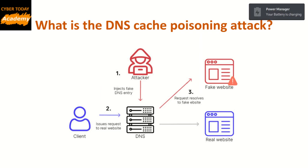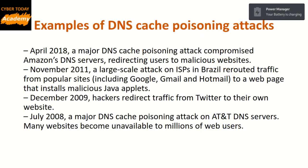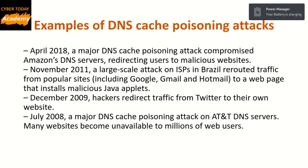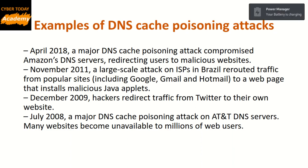Examples of DNS cache poisoning attacks. April 2018: a major DNS cache poisoning attack compromised Amazon's DNS servers, redirecting users to malicious websites. November 2011: a large-scale attack on ISPs in Brazil rerouted traffic from popular sites including Google, Gmail, and Hotmail to a web page that installs malicious Java applets. December 2009: hackers redirected traffic from Twitter to their own website. July 2008: a major DNS cache poisoning attack on DNS servers made many websites unavailable to millions of web users.